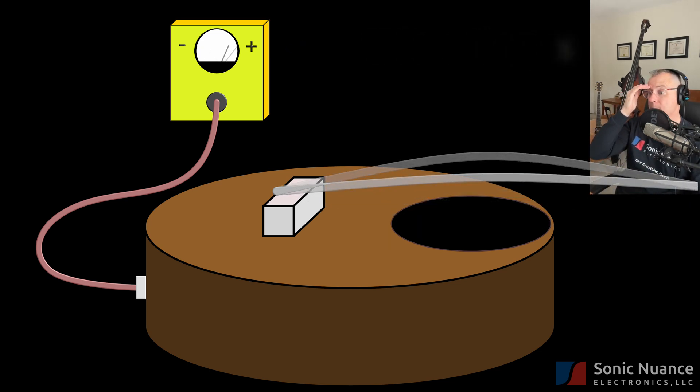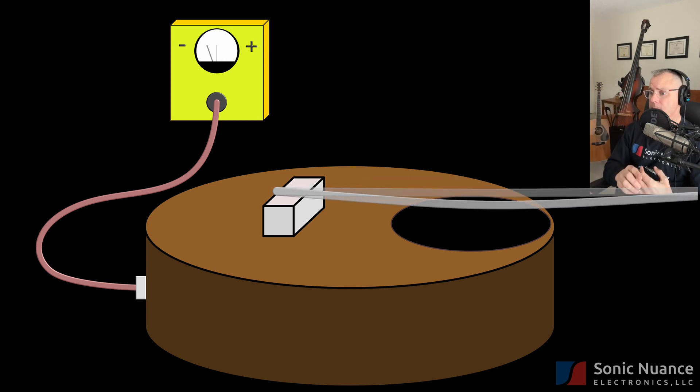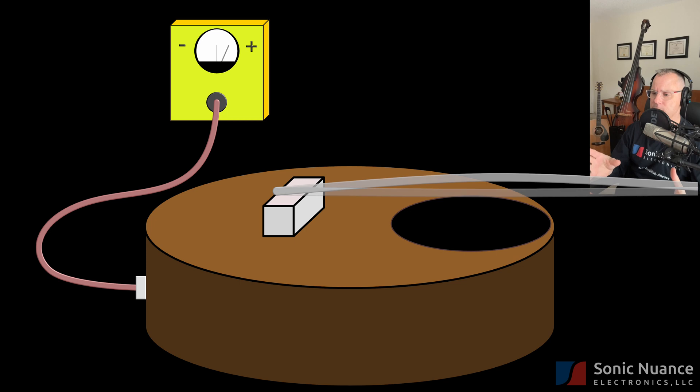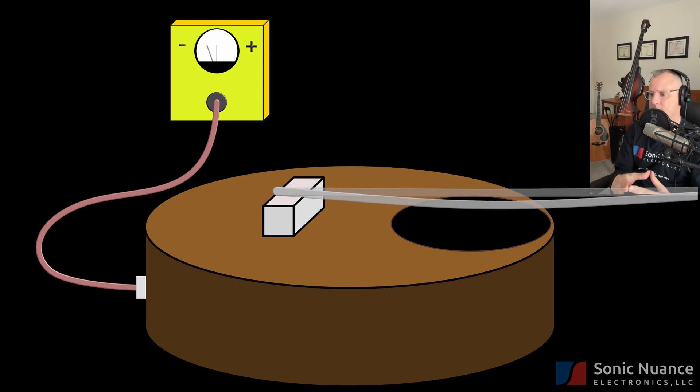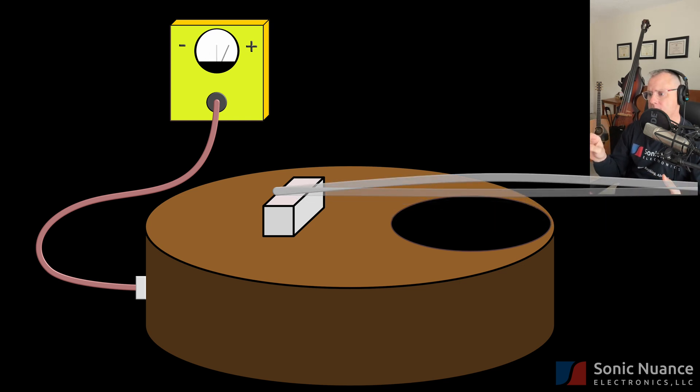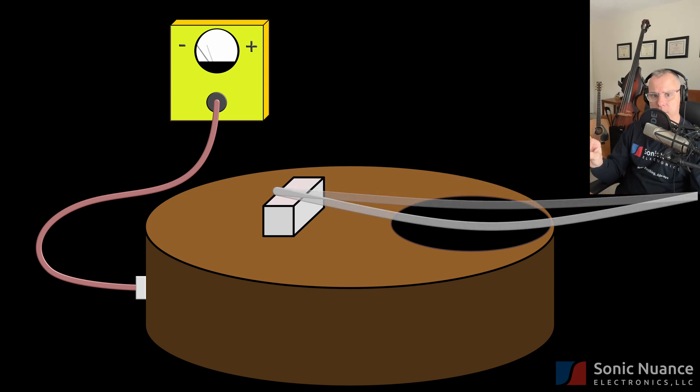The first is you don't need a ferrous or magnetizable string, unlike a magnetic pickup. You can have a nylon string instrument, or even drums. And this is why you can tap on the bridge, in this case, on this instrument, and you would hear the tapping directly.